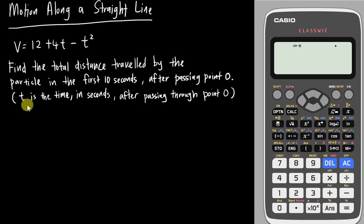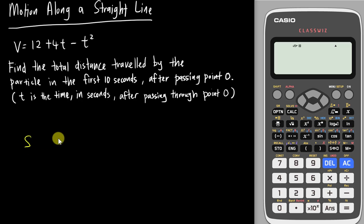At the very beginning they will tell you t is the time in seconds after passing through O. They want you to find the distance. So the first thing you need to know is how to find distance in this topic, which covers displacement, velocity, and acceleration.